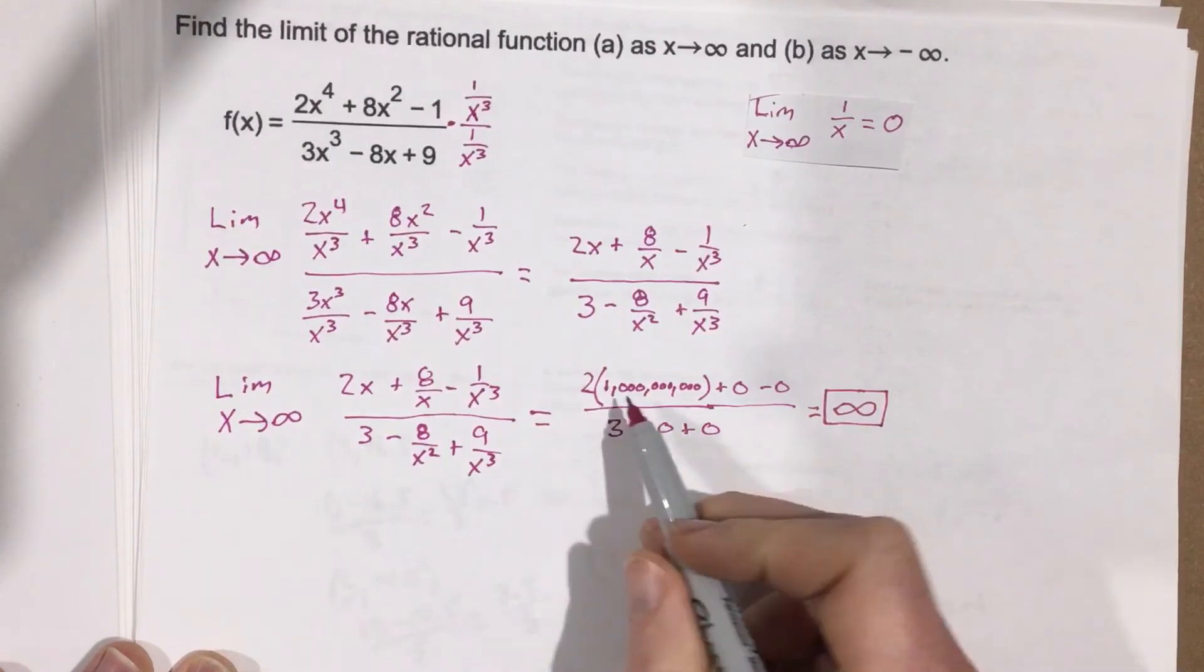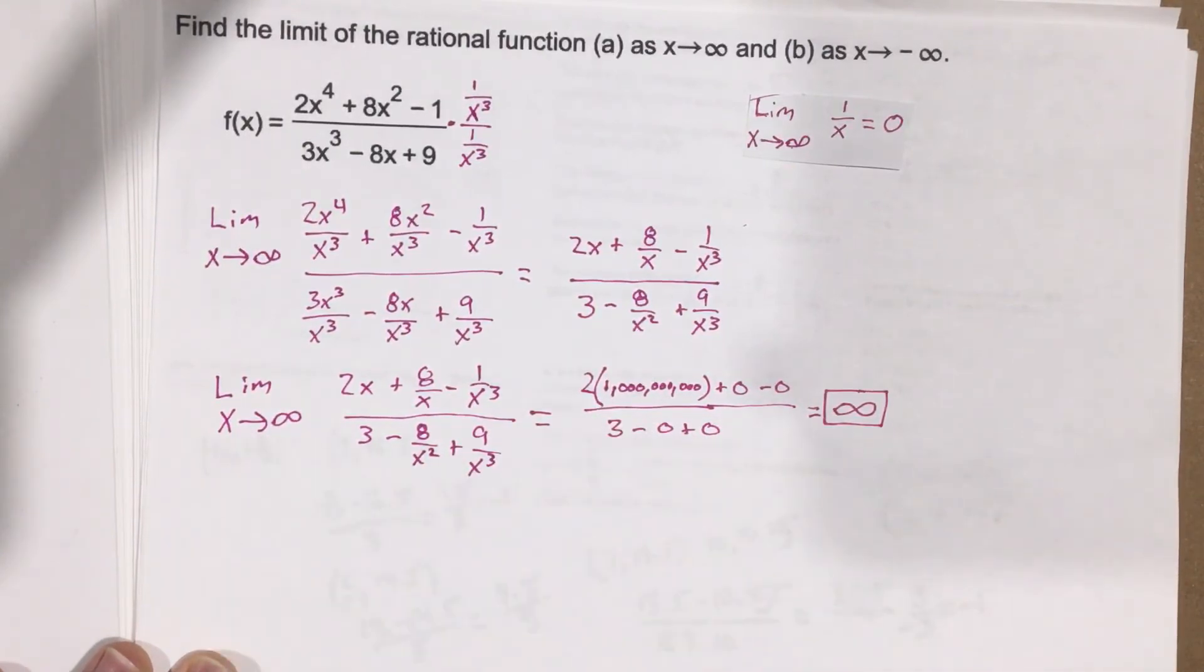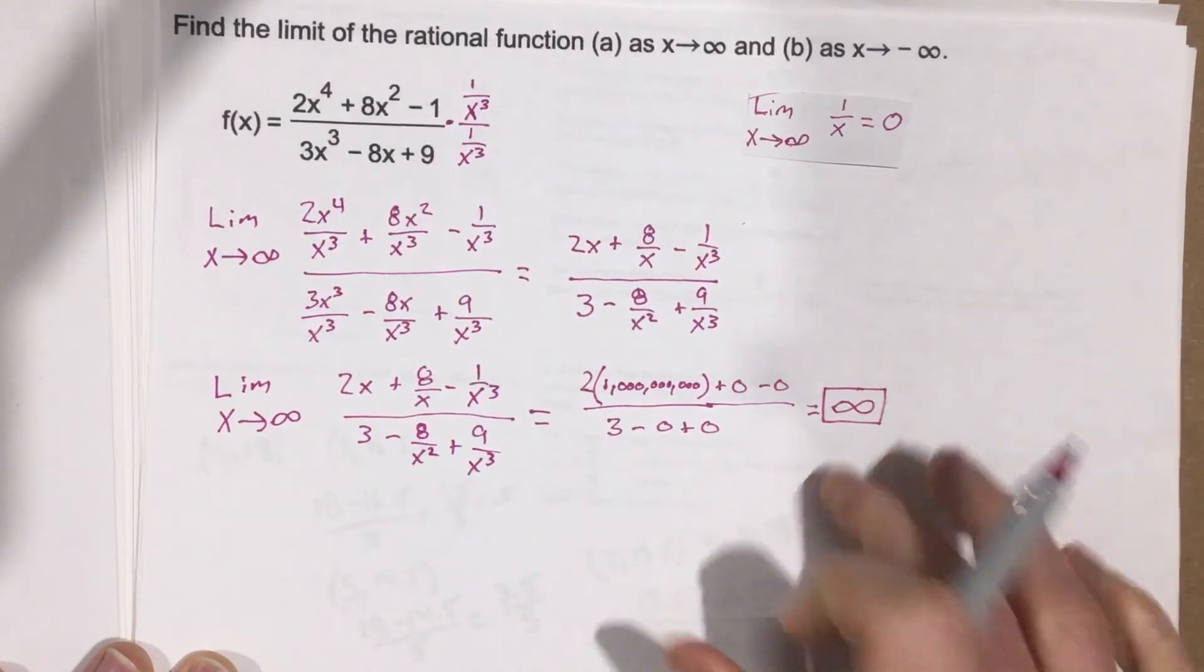But the limit as x approaches infinity is going to be a large number. It's just going to keep getting larger and larger as x approaches infinity. So that means that we're approaching infinity as well.